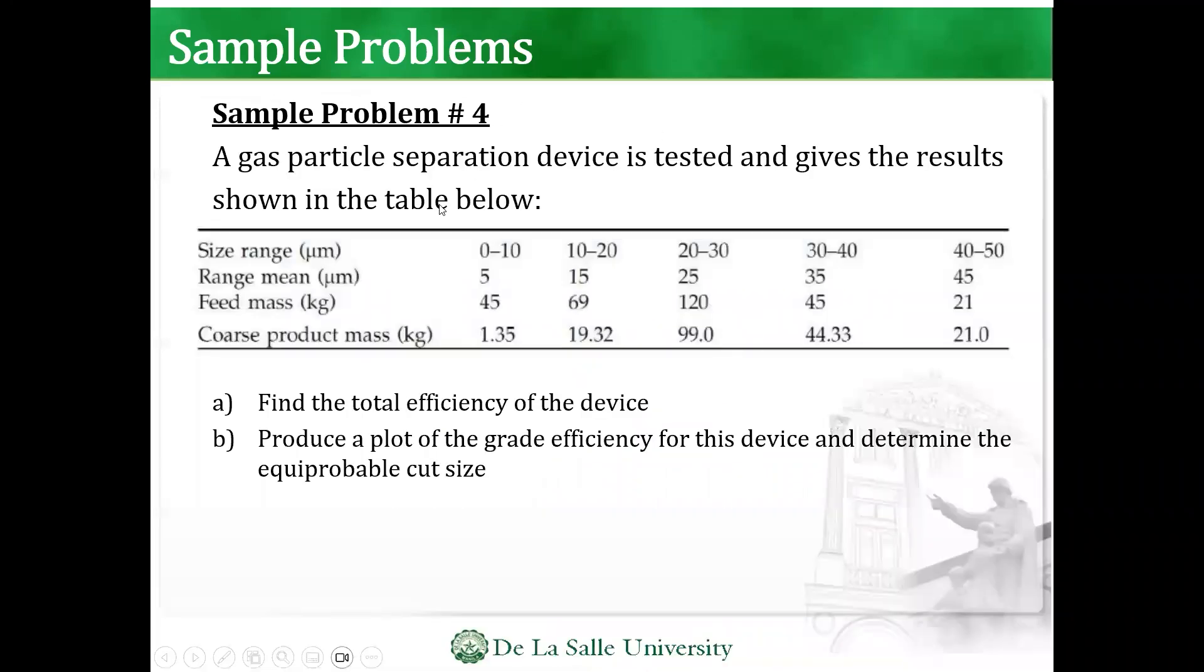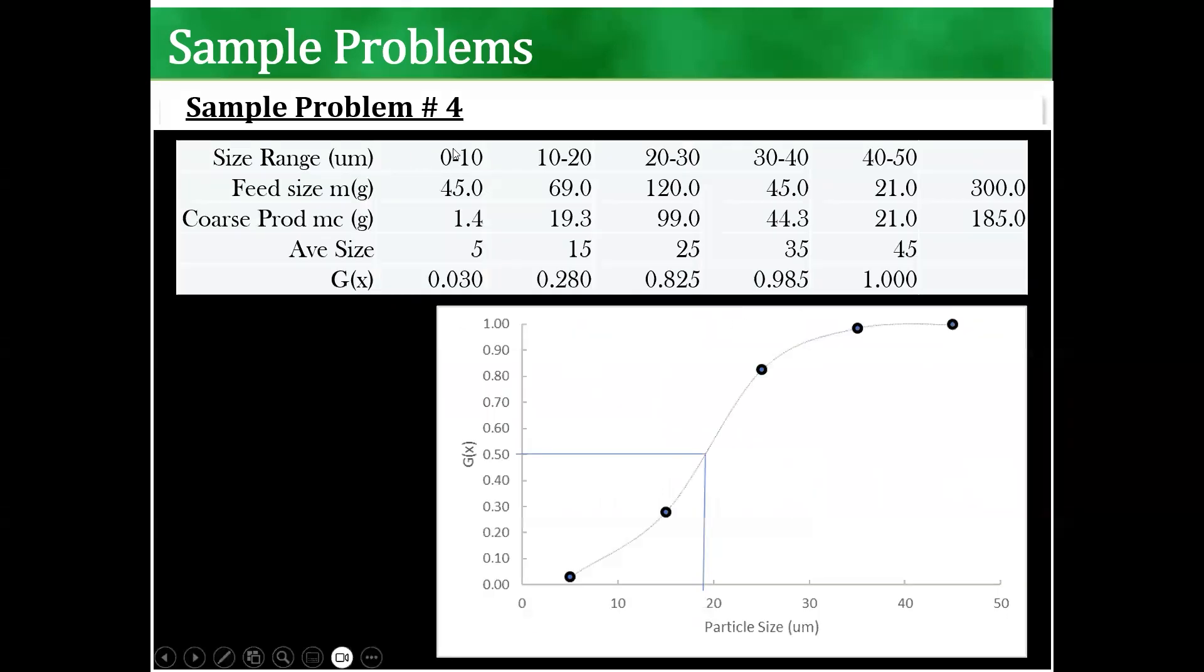Also, you're given in here, find the total efficiency of the device and produce a plot of the grade efficiency for this device and determine the equiprobable cut size. So you're given the test results. Again, what I did was I just took the average size and the grade efficiency for each.